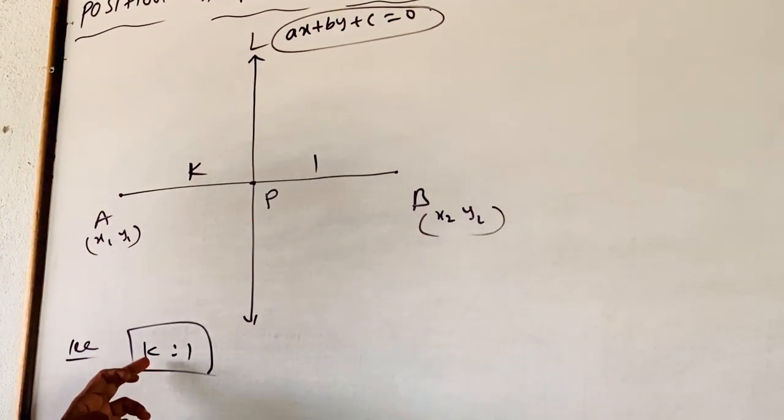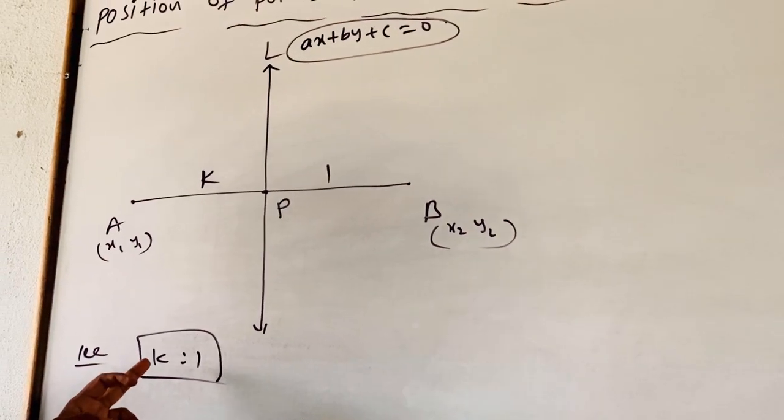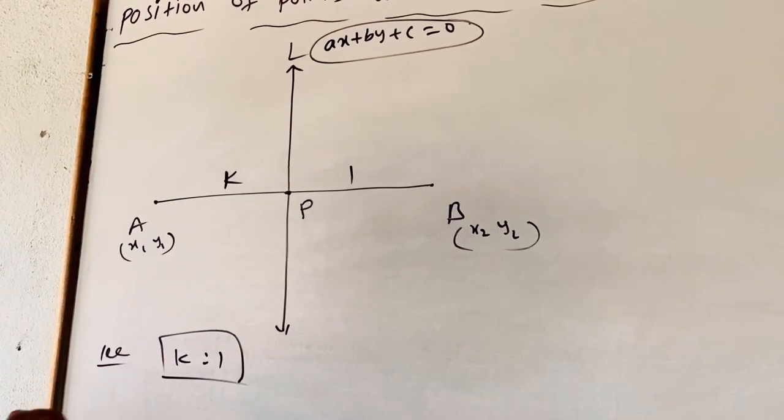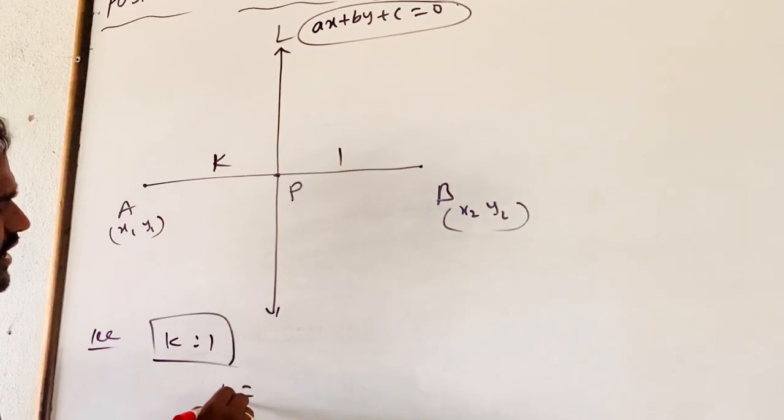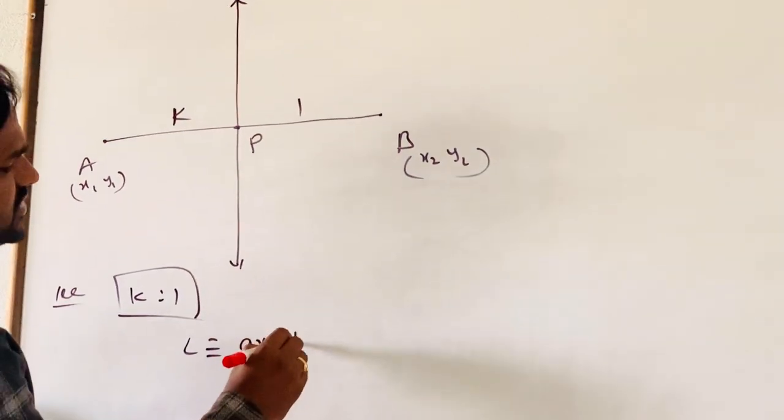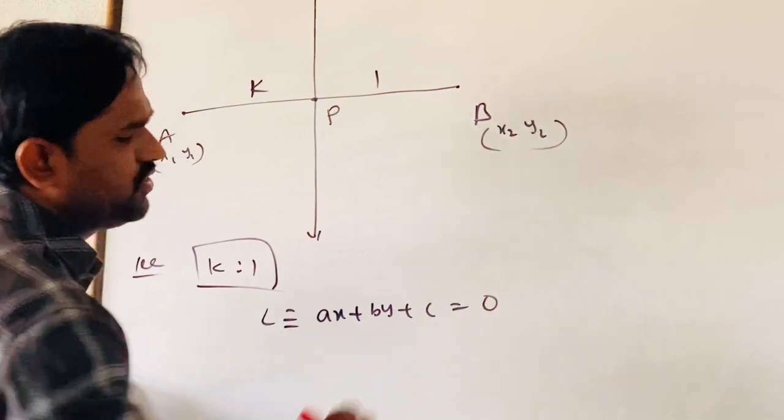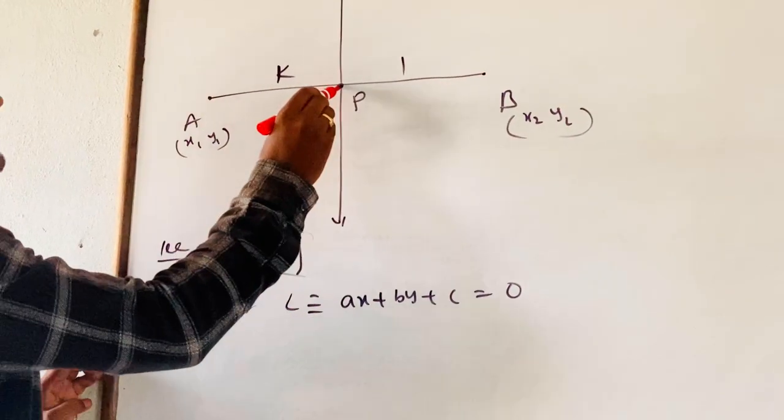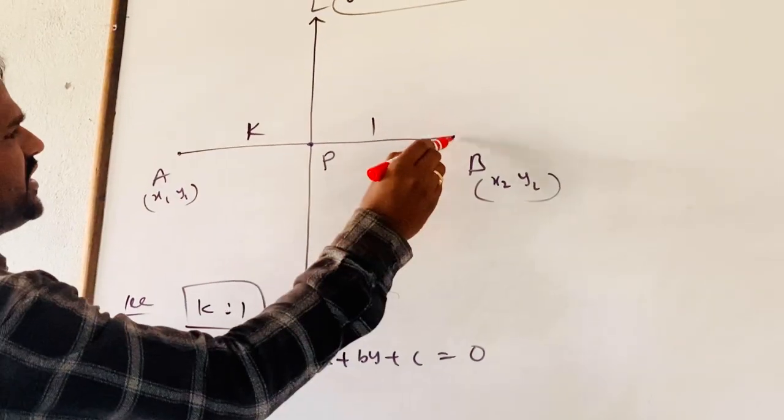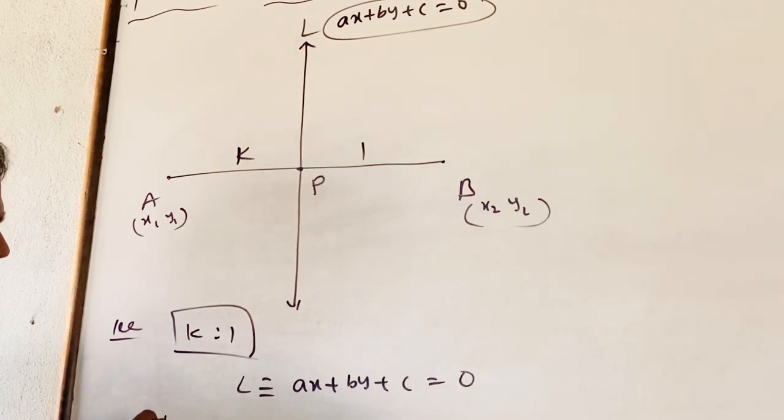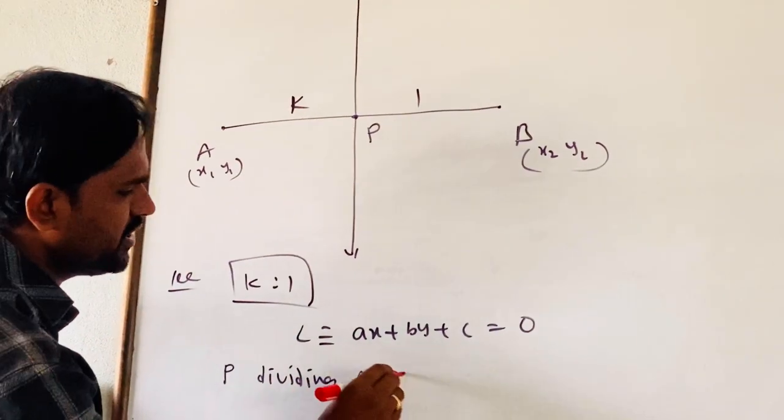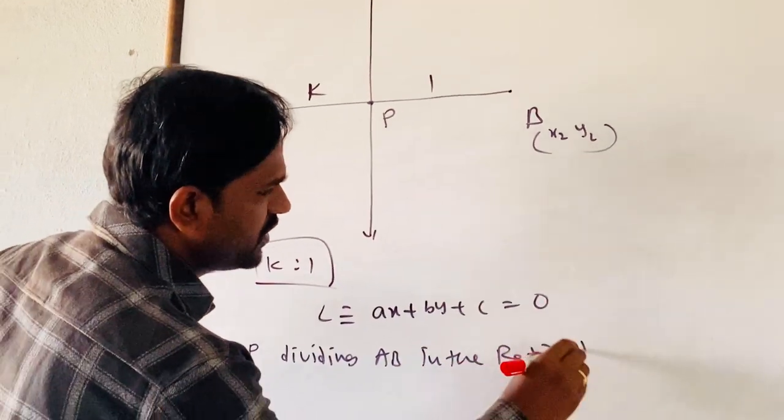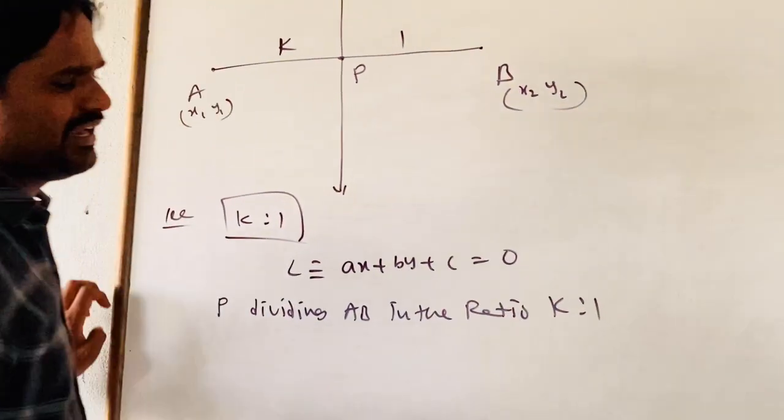We do not know the exact ratio; K may be rational, real, whatever. The equation of the line is identically equal to AX plus BY plus C equals 0. Let P divide A, B internally in the ratio K:1.